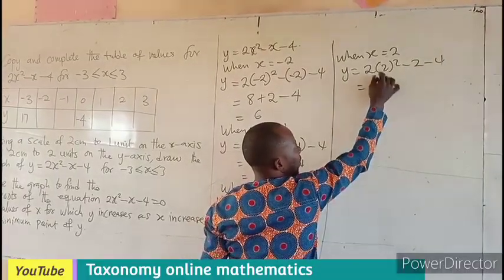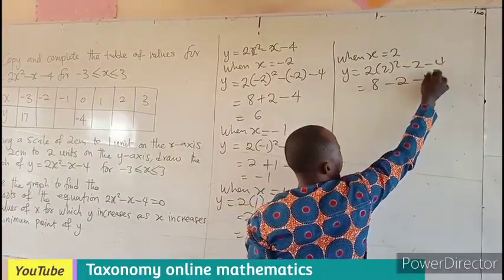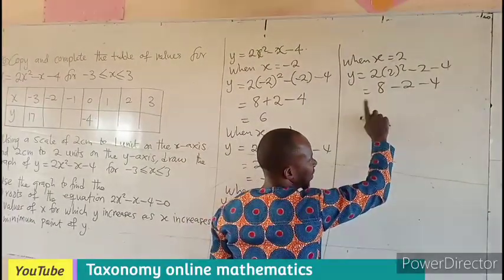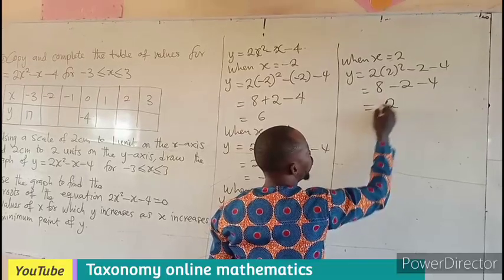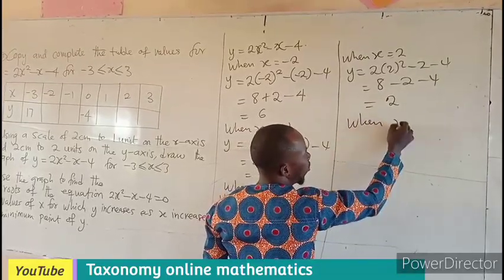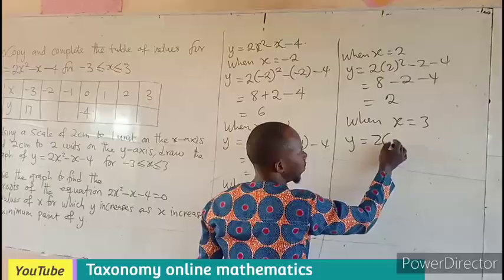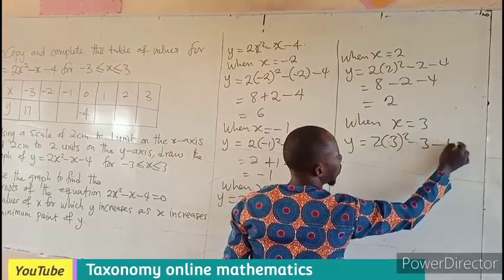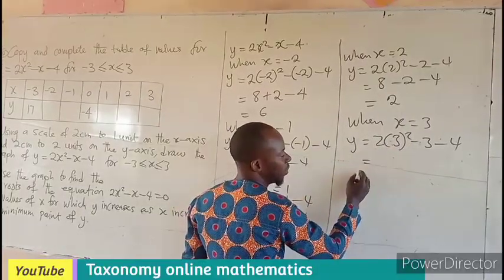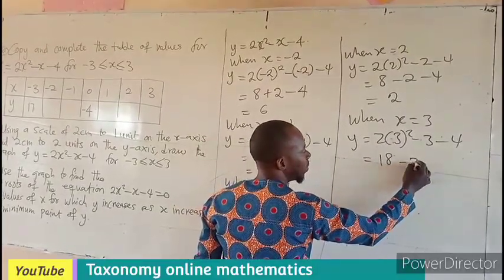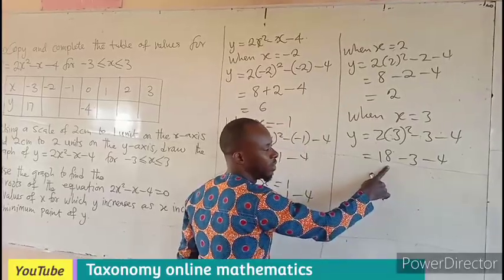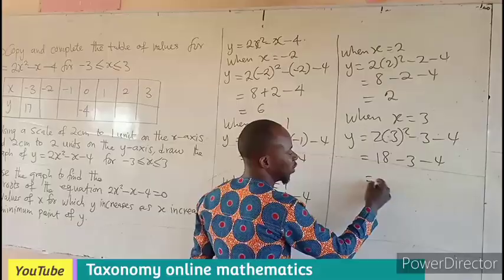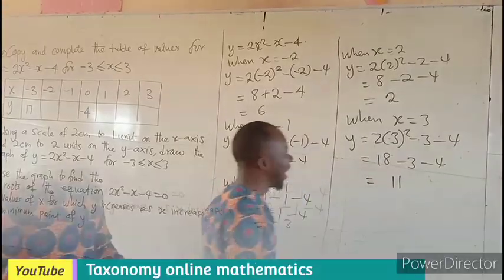For x = 2, we get 2(2)² - 2 - 4. This gives 8 - 2 - 4 = 2. On the final point when x is 3, y becomes 2(3)² - 3 - 4. This equals 18 - 3 - 4 = 11. So now we have all the missing y values.